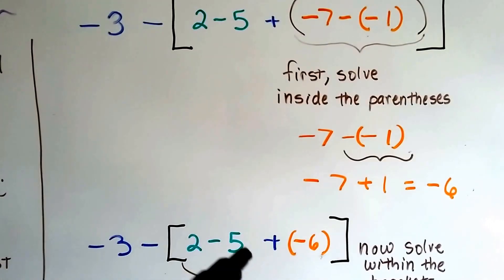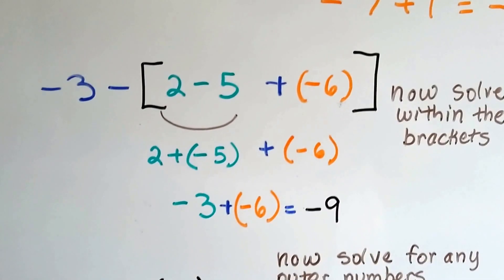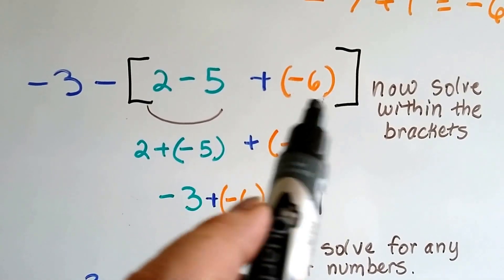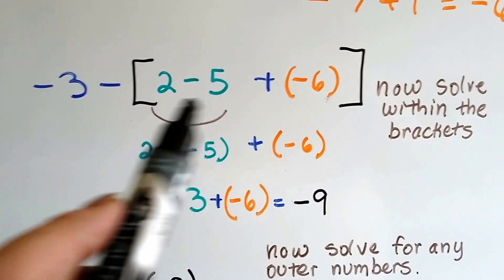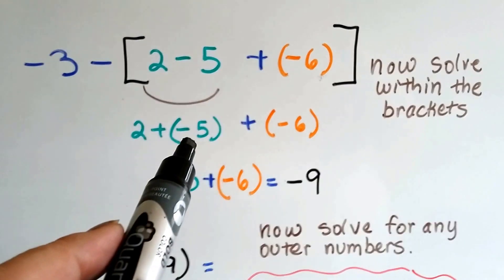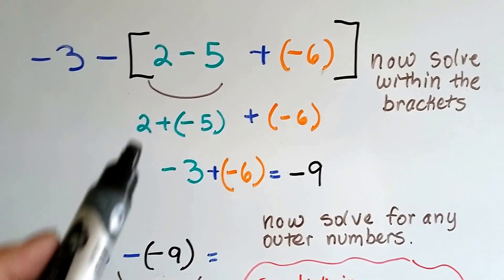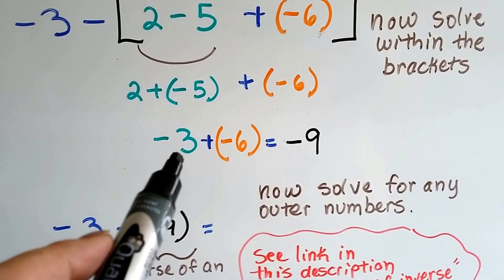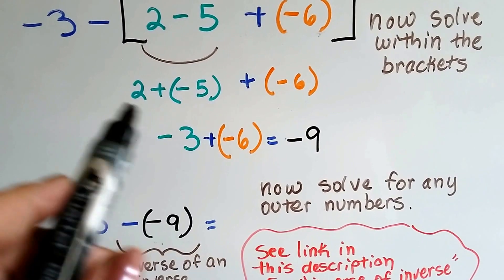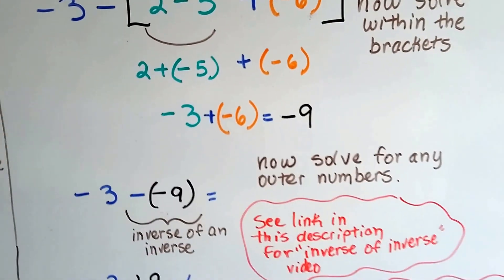Now we drop down the 2 minus 5 and the plus sign in the brackets, and the negative 3 and the minus sign from outside. Now we solve within the brackets: we've got 2 minus 5 plus a negative 6. When we subtract, we add the opposite, so we do 2 plus a negative 5 plus a negative 6. We can add negative 5 and negative 6 to get negative 11, then add 2 to get negative 9 — or do 2 plus negative 5 to get negative 3, then add negative 6 to still get negative 9. Either way, we get negative 9.